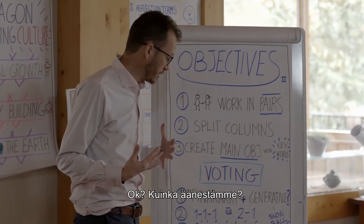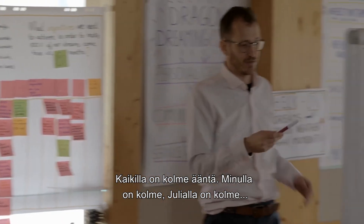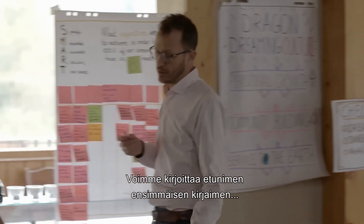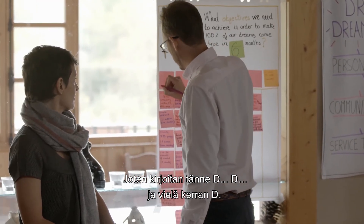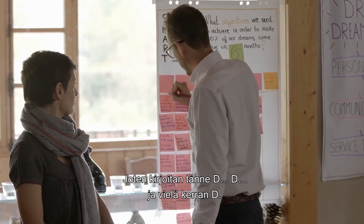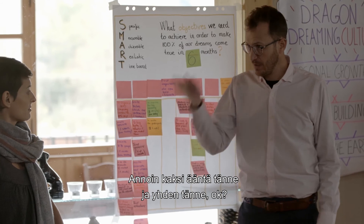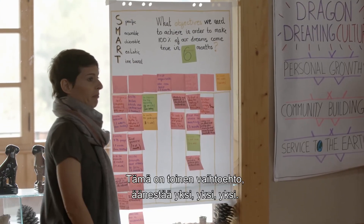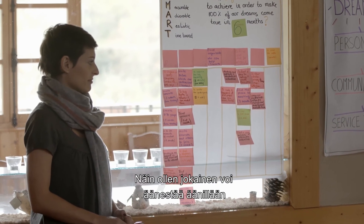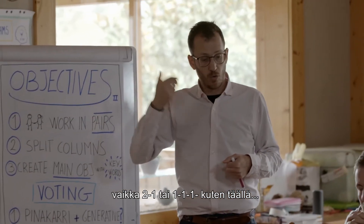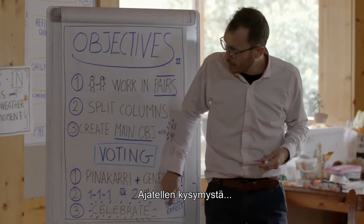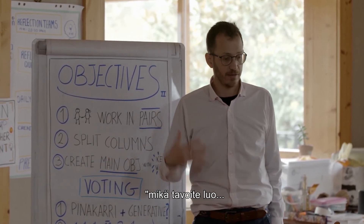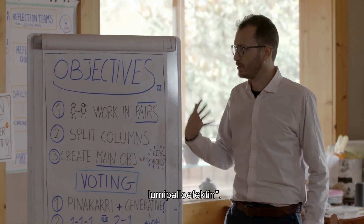How do we vote? Each person gets three votes. We vote using our initials — for example, I write 'D' on my chosen post-its. You can distribute your three votes in two ways: two votes on one objective and one on another, or one vote each on three different objectives. Everyone votes in turn. The guiding question is: which objective will create the snowball effect that starts moving all the rest?